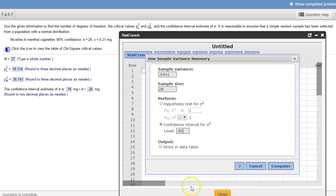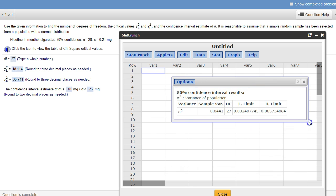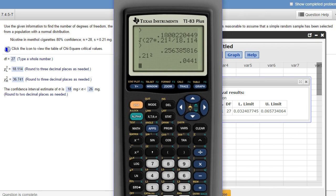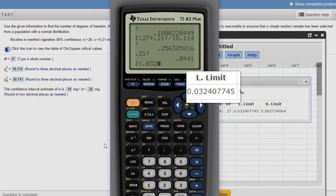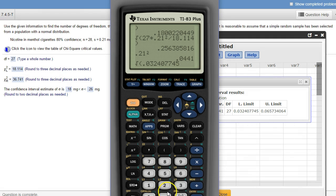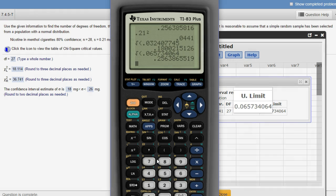Now this is not the answer to this and this obviously, but if we take the square root of those two numbers, the square root of variance is standard deviation and that's where those numbers will come from. So 0.032407745, that's the lower limit, that's the number that's going to go right there. There's the 0.18, and then the square root of the upper number, 0.065734064, there's the upper number.